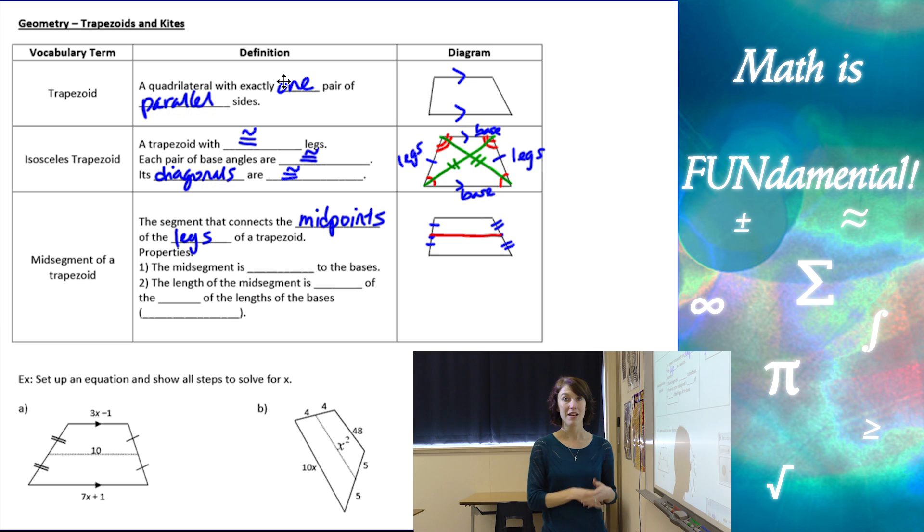Now, if you remember back from a couple chapters ago, we talked about mid-segment of a triangle and those properties, the mid-segment of a trapezoid, the properties are going to be the same, almost, just a little different, but it's going to be very close to the same.